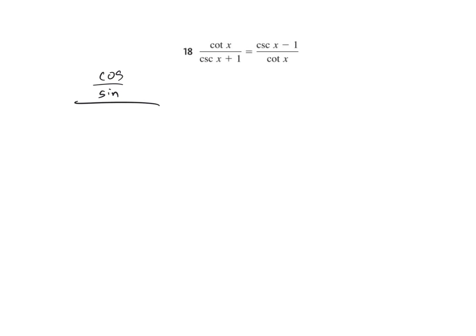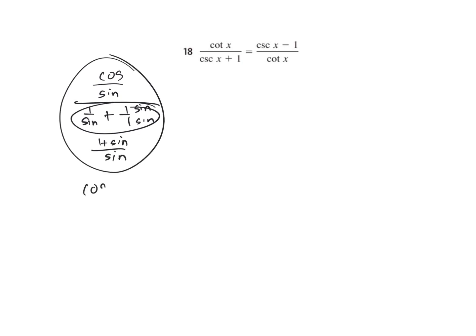Cotangent of x is cosine over sine, and cosecant is 1 over sine plus 1. Get a common denominator before keep change flip: our denominator is 1 plus sine all over sine. Keep change flip of the whole thing: cosine over sine times sine over 1 plus sine. The sines reduce out, giving cosine over 1 plus sine.